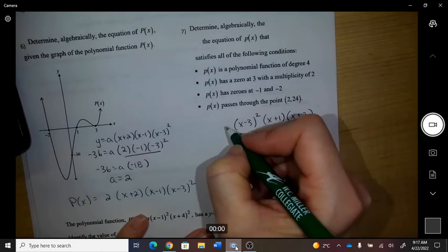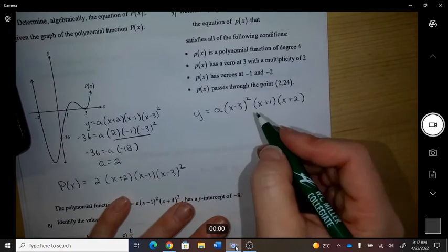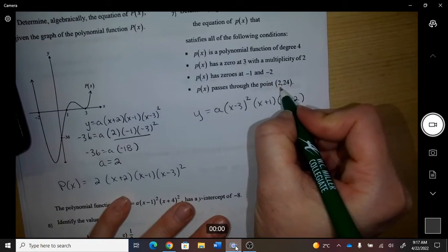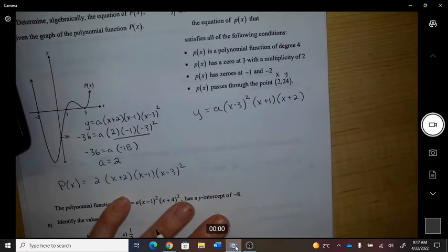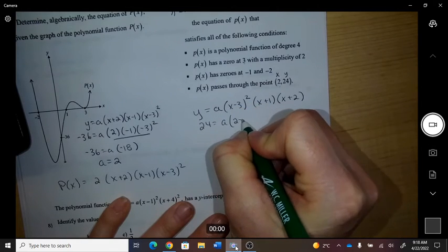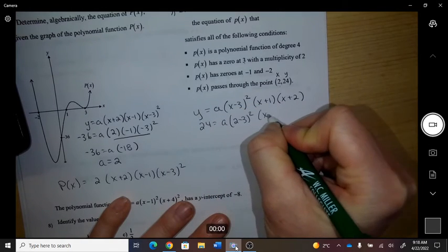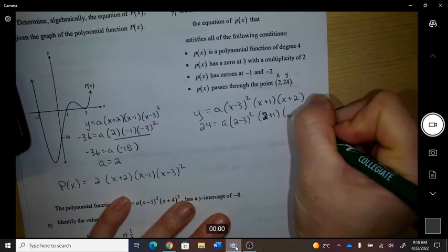And we have some kind of a value. So it passes through the coordinate 2, 24. So this time I'm going to plug in 2 for the x and 24 for the y. Oops, not x, 2. Keep plugging 2 in for every x.